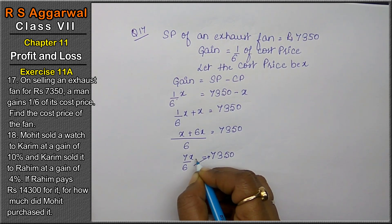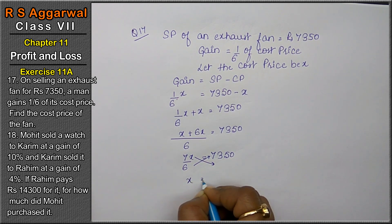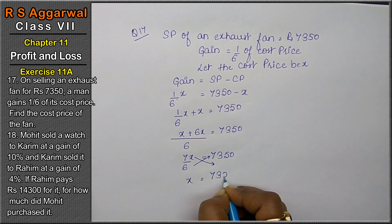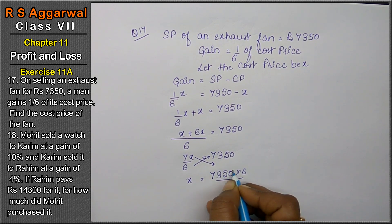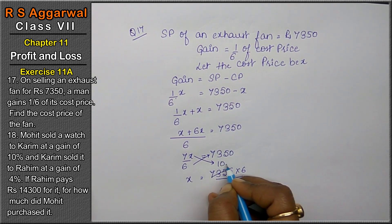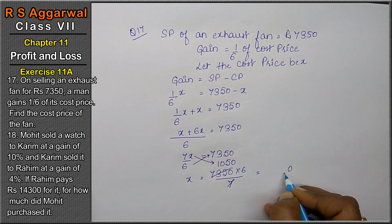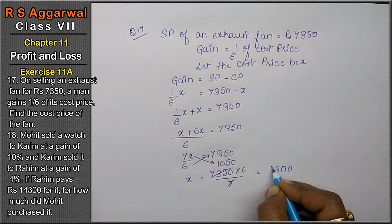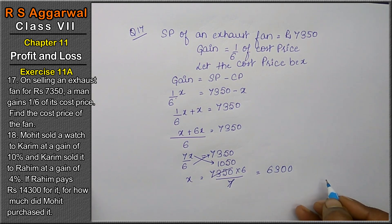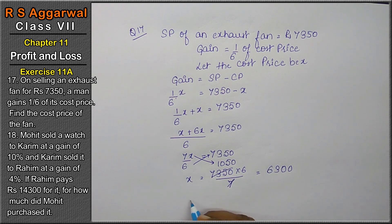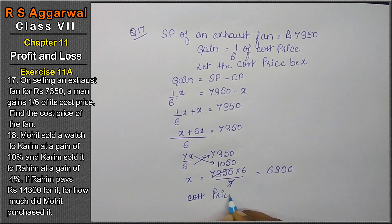The 6 moves to the other side, and the 7 comes over. So x equals 7,350 multiplied by 6 upon 7. Solving: 7 into 1 is 7, cancel, and 7 × 5 is 35. We get cost price equals Rs. 6,300.